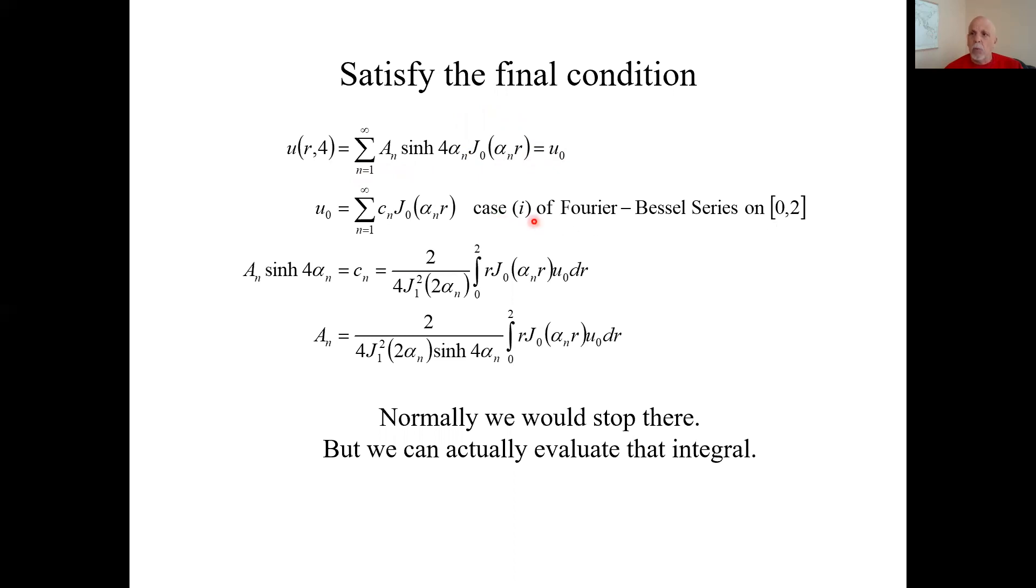Which gives us these C sub n's. And here they are. So we're matching coefficients. This big A sub n hyperbolic sine must equal the little C sub n's from the Fourier-Bessel series. So that's matching coefficients. So here's our way of computing the A sub n's.